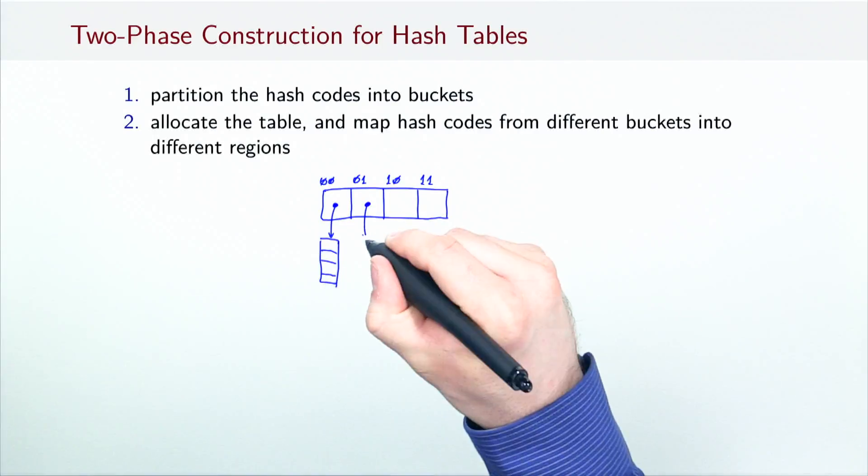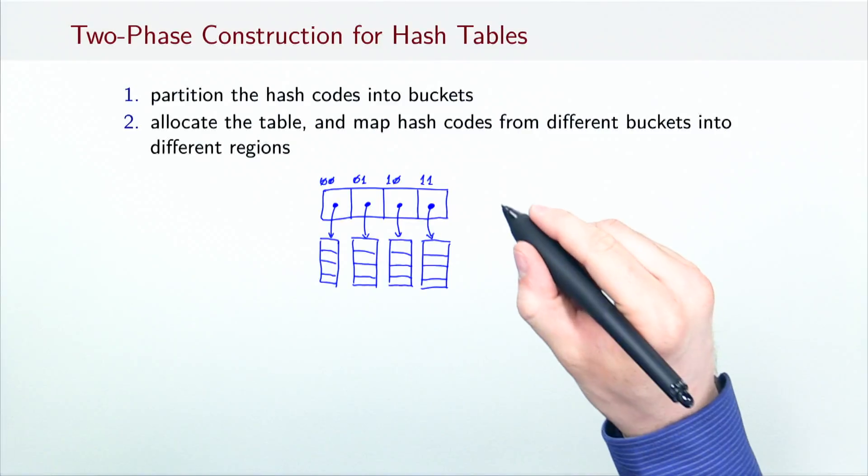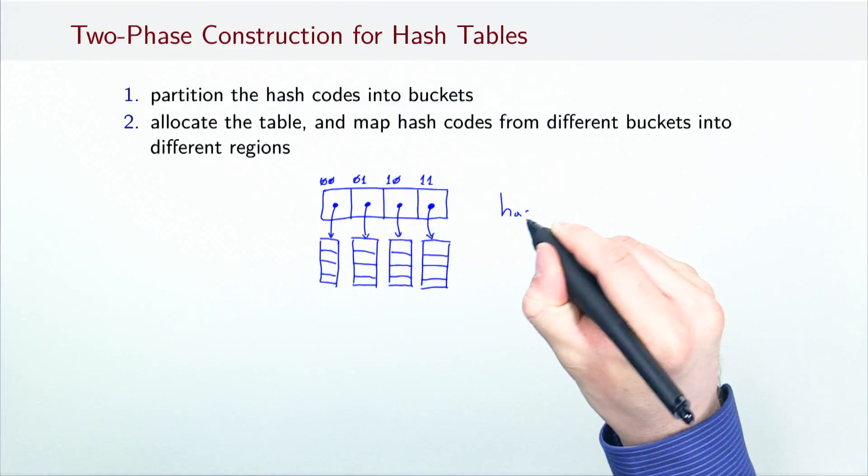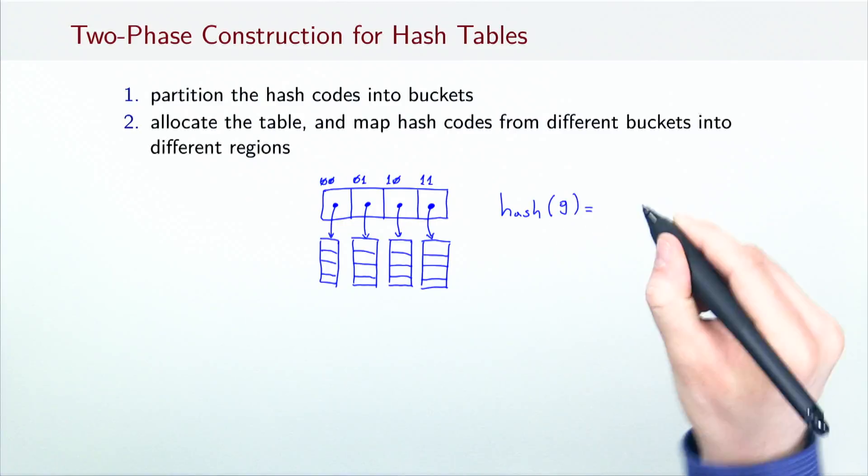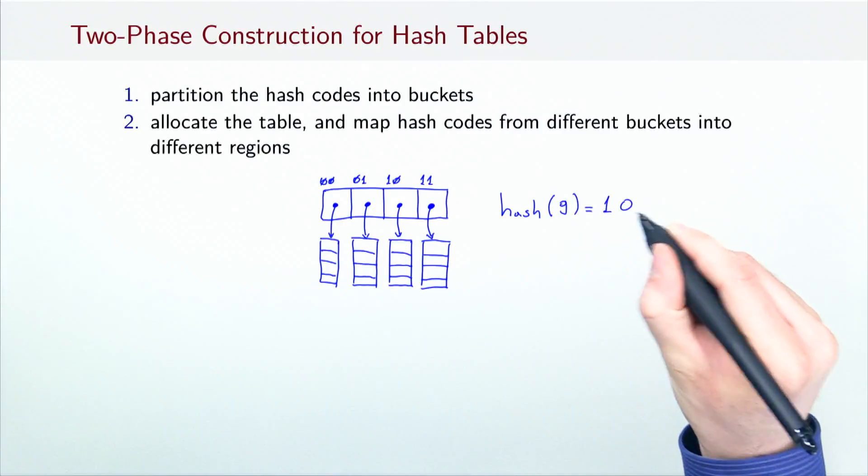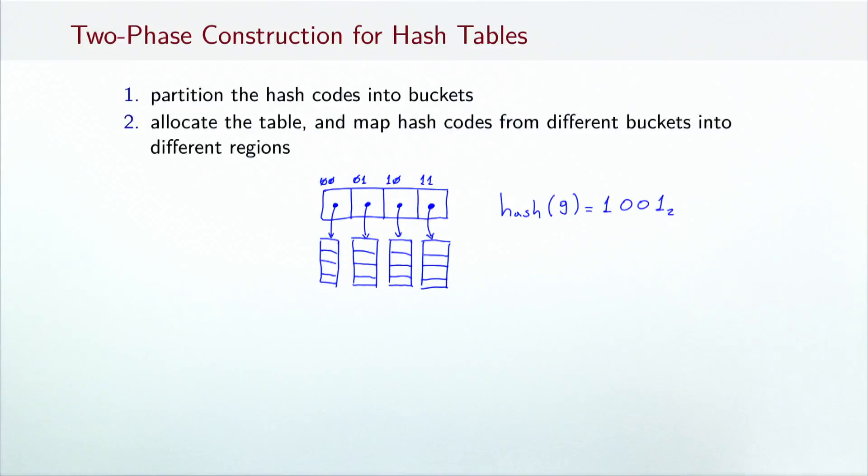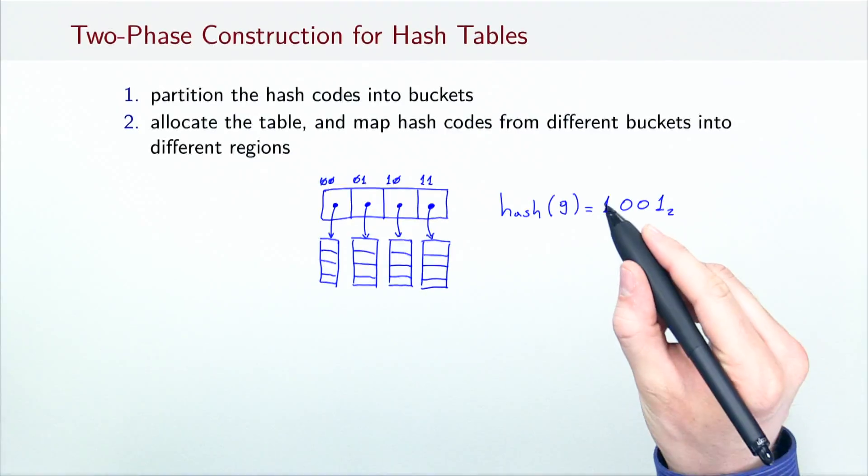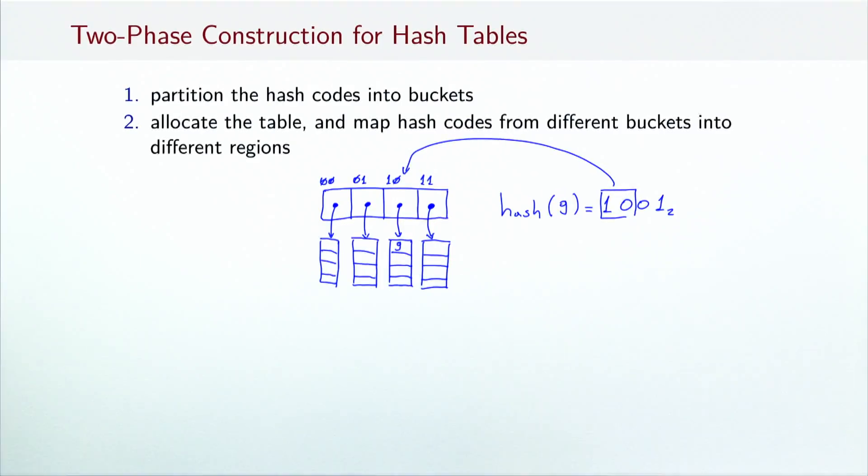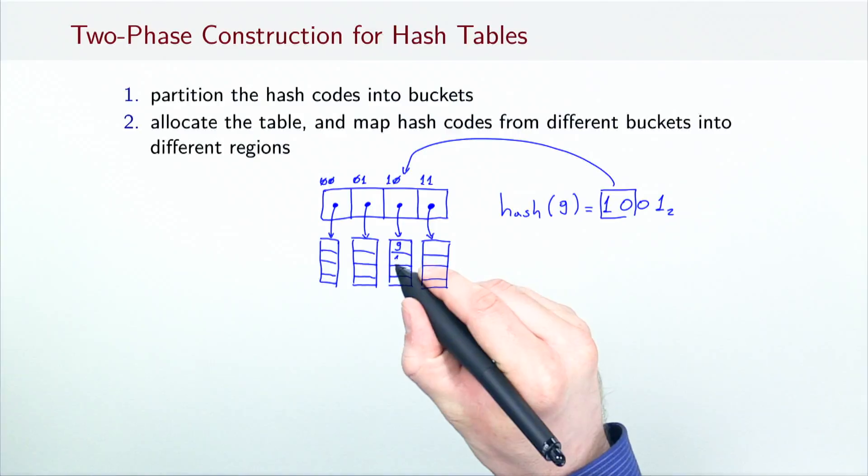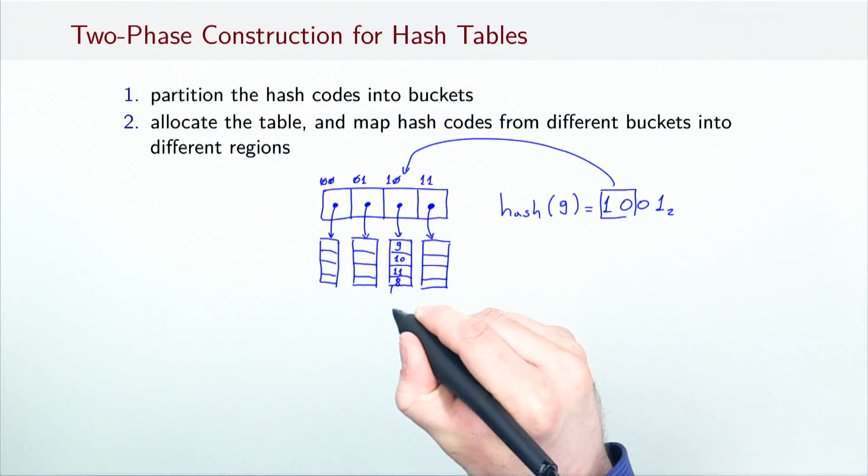For hash tables, we can separate the elements according to their hash code prefix. For example, if we want to add an element 9 to the hash table, then we first compute its hash code. Let's assume that the hash code of the element 9 is 1 0 0 1 in binary. Since it has the prefix 1 0, it must be added to the following bucket. Each bucket is a linked list of arrays. Once an array in the linked list becomes full, a new array is added to the end.